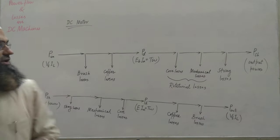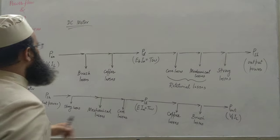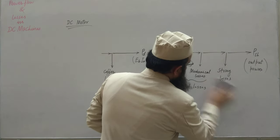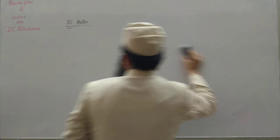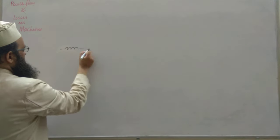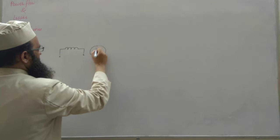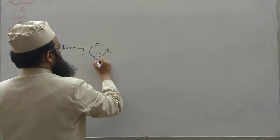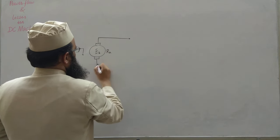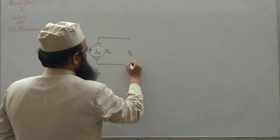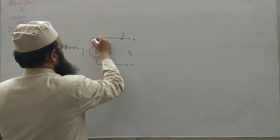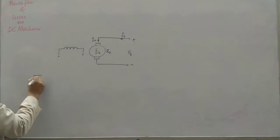Now let us discuss the power developed in a DC motor. This is PD represented by Eb × Ia. We will derive the condition for maximum power developed in a DC motor. Taking a separately excited motor, the KVL equation gives Vt = Eb + Ia·Ra. Multiplying both sides by Ia: Vt·Ia = Eb·Ia + Ia²·Ra + Vbd·Ia, representing input power, developed power, copper loss, and brush loss respectively.